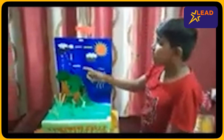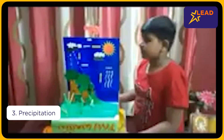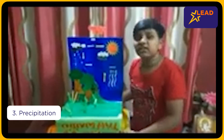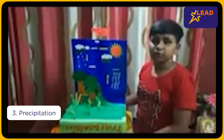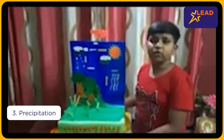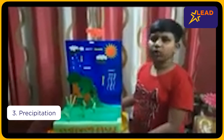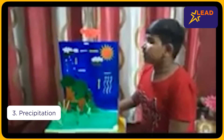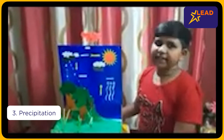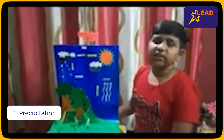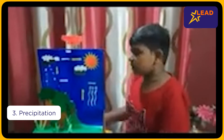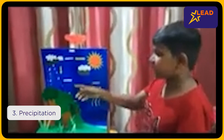The next stage is precipitation. Precipitation means when the cloud is too huge and cannot hold any more water, it bursts open and it will rain. This process is known as precipitation.